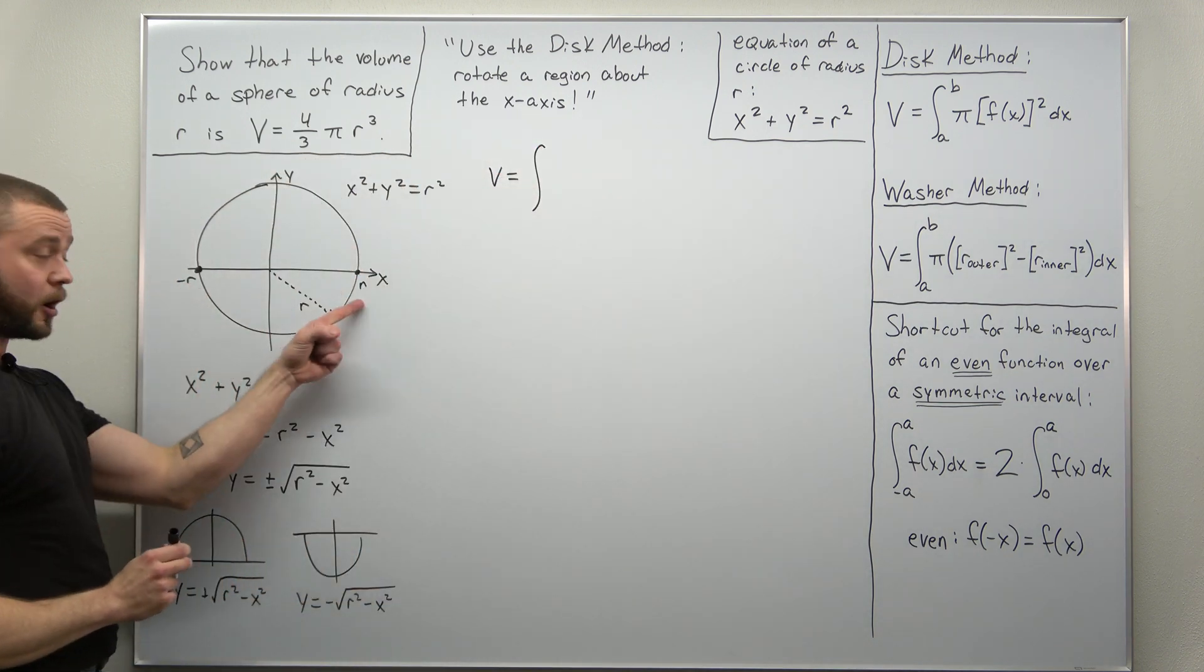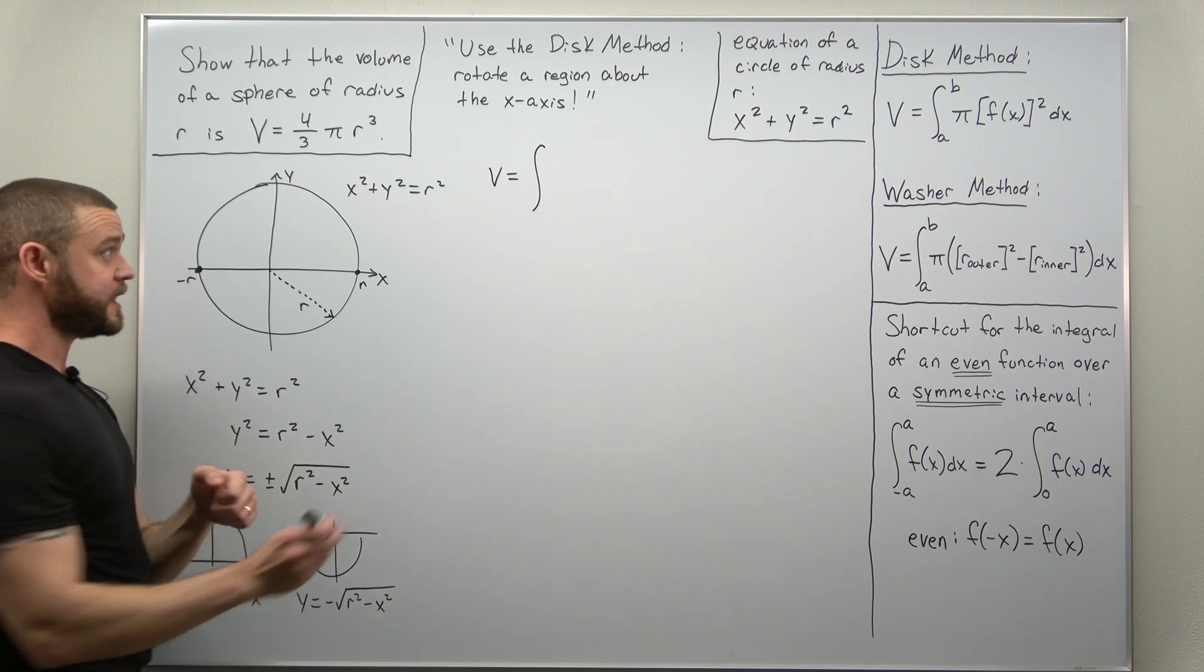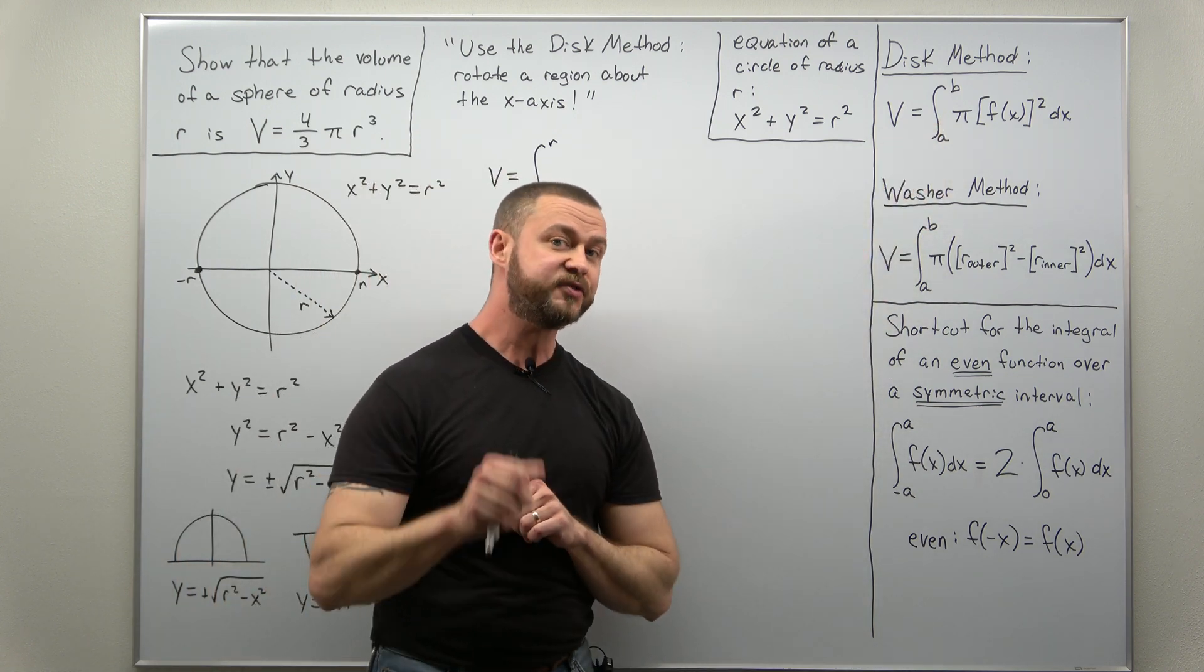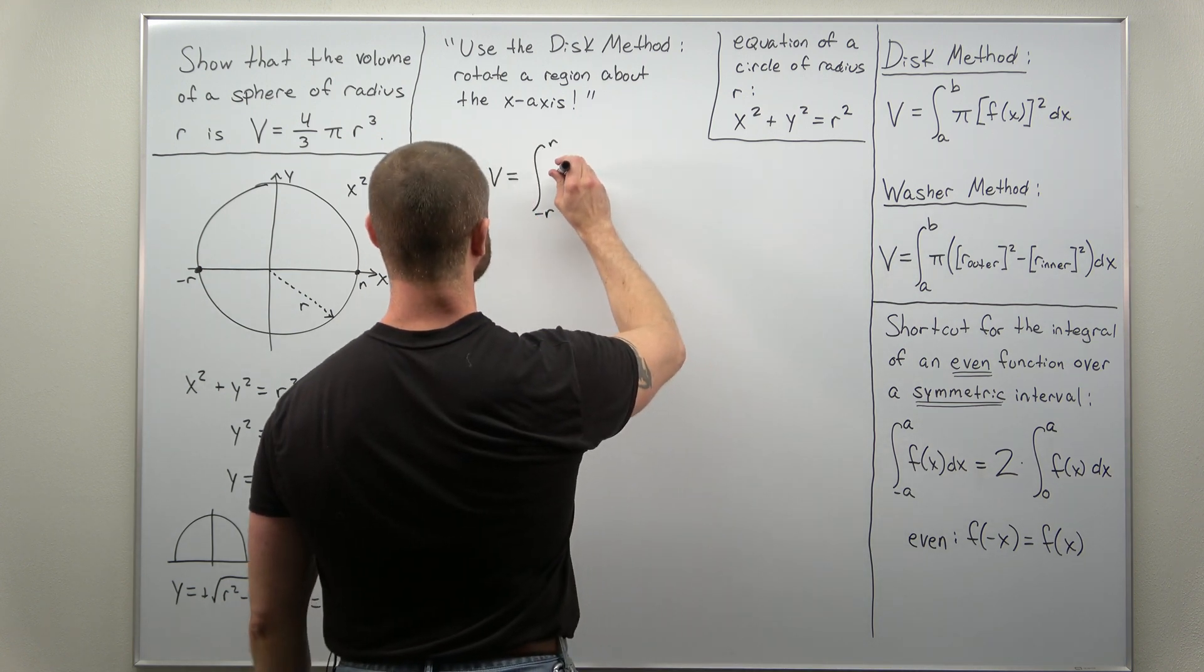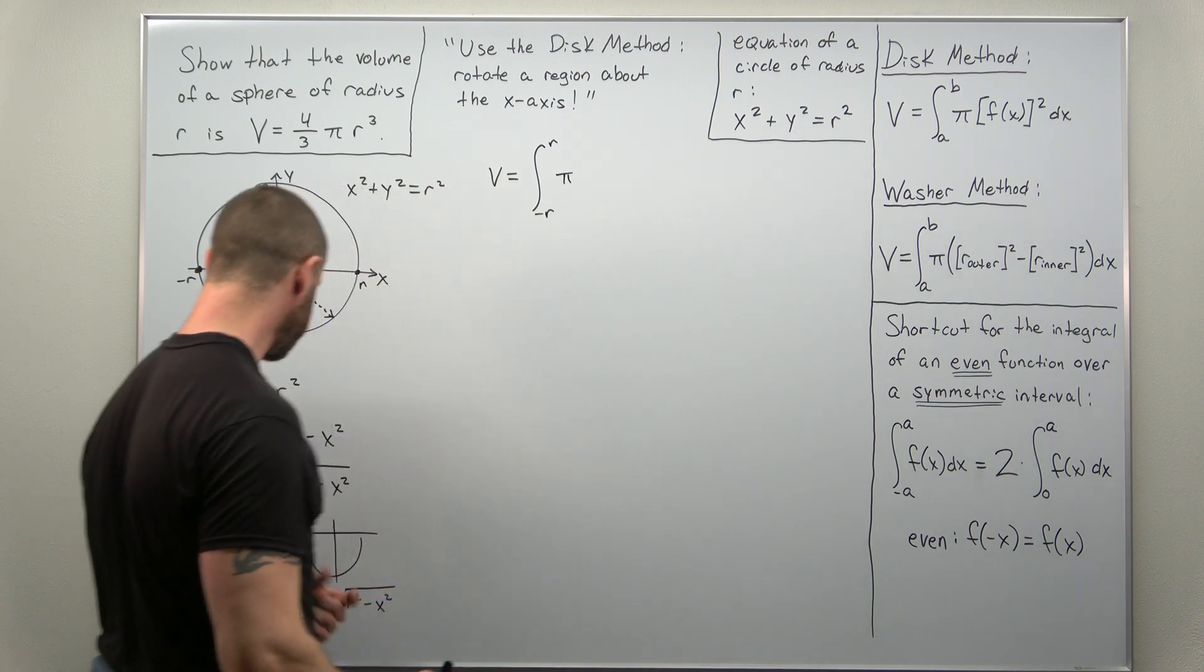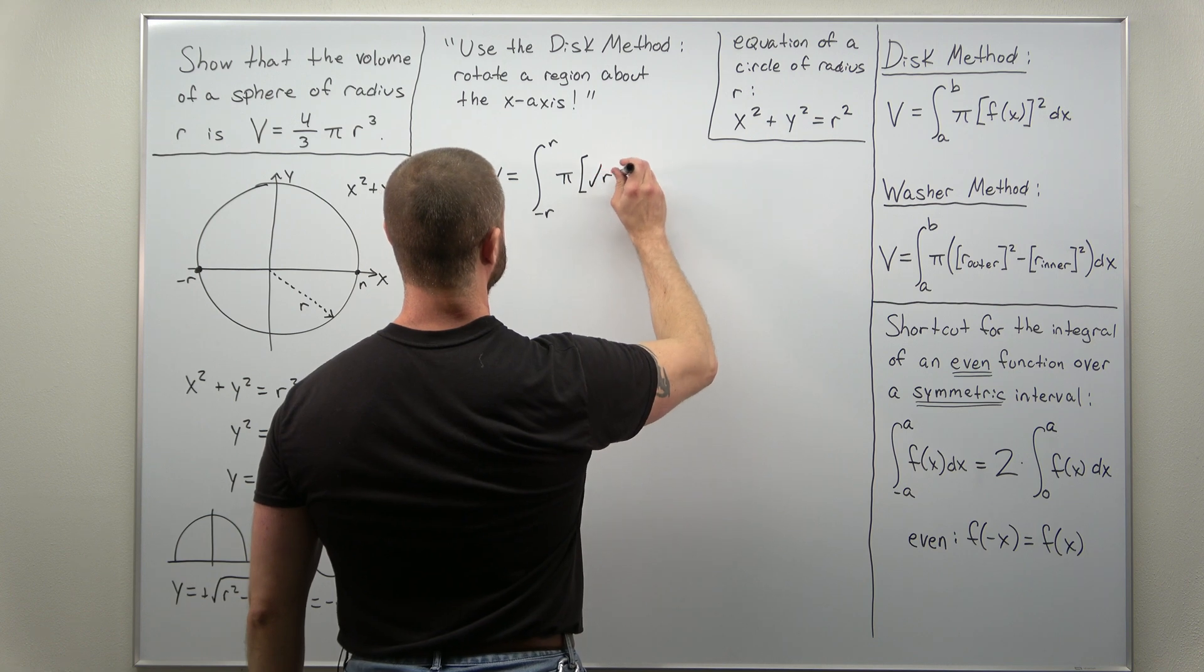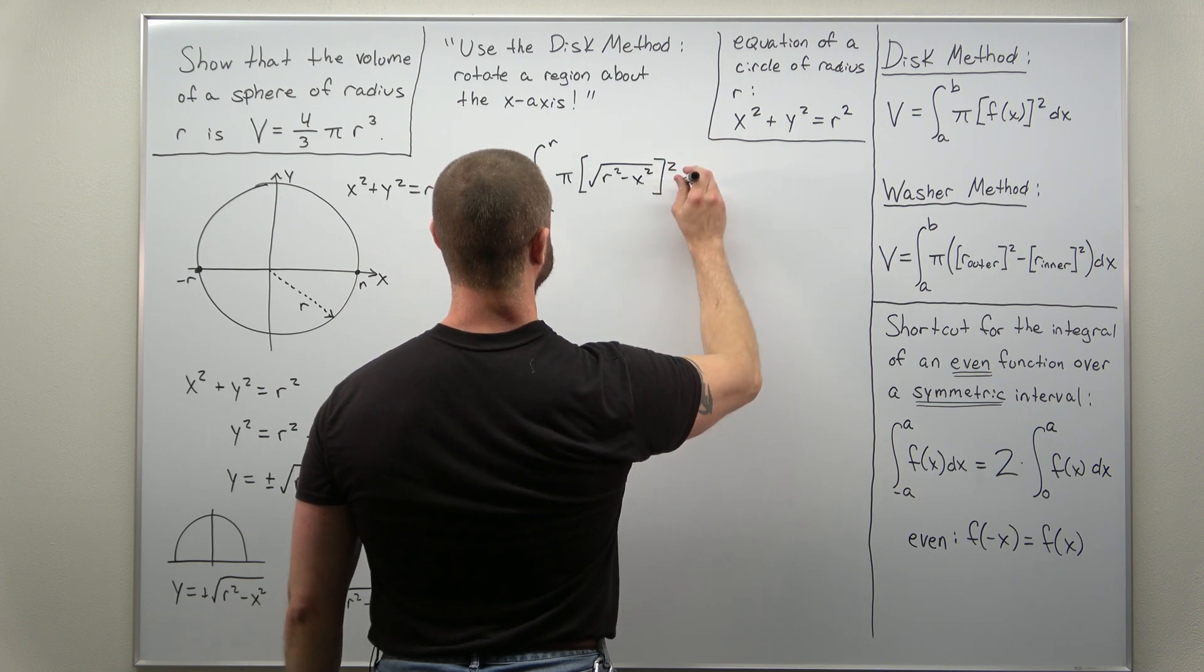We get our volume here as the integral from negative r to r. Your region here that you're rotating lies between negative r and positive r on the x-axis. All right, the disk method also gives you a factor of pi, that's because your cross sections are circular. Pi r squared. All right, and what we now integrate is basically the radius squared where we're going to be using the positive root so we have the square root of r squared minus x squared and we square that and then integrate that with respect to x.